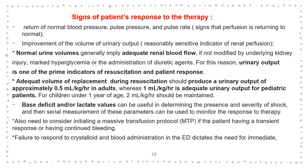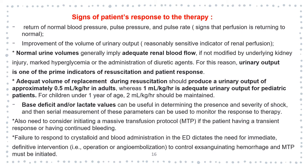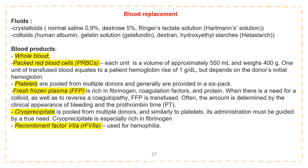Failure to respond to crystalloid and blood administration in the emergency department dictates the need for immediate definitive intervention such as surgery or angioembolization to control exsanguination, and a massive transfusion protocol must be initiated. Blood replacement uses fluids such as crystalloids and colloids, and blood products such as whole blood, packed red blood cells, platelets, fresh frozen plasma, cryoprecipitate and recombinant factor 7a, which is used mostly for hemophilia.